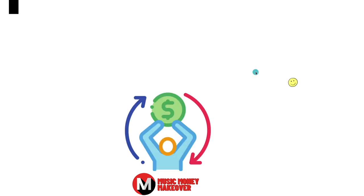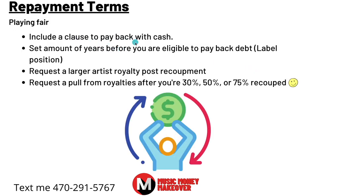Here are my proposed repayment terms. Include a clause to pay back with cash — I highly propose this, but I'm on the side of labels too. I don't feel labels should go broke, so here's what I propose: set an amount of years before you're eligible to pay back the debt. Let's say the artist can pay back with cash starting at three years, only in increments of $10,000 every six months, or $250,000 every nine months — so the label still has a chance to make money. Also request a larger artist royalty post-recoupment — maybe bump it up five percent after you've recouped your debt.